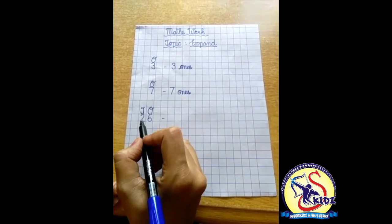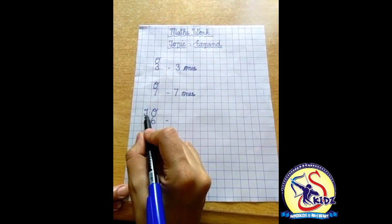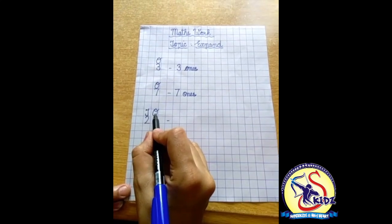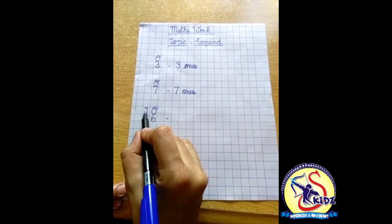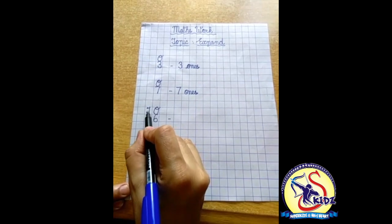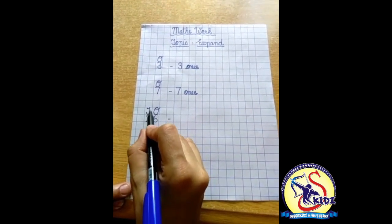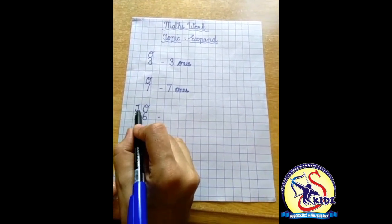Now just see, tens is a bigger number or ones is a bigger number? We have to see the value, tens and ones. So tens is a bigger number.